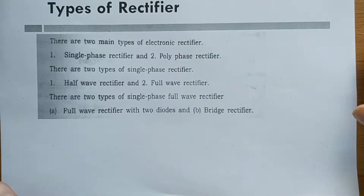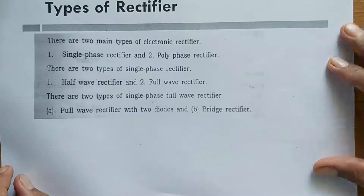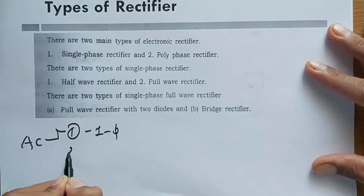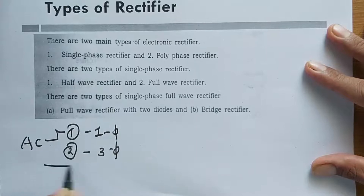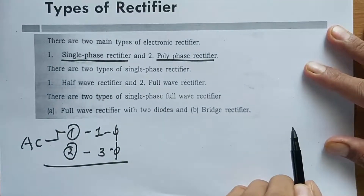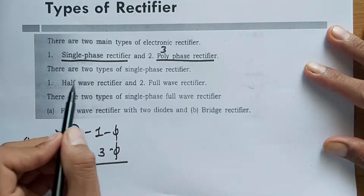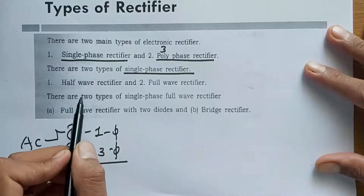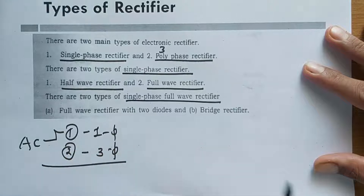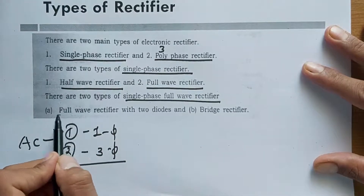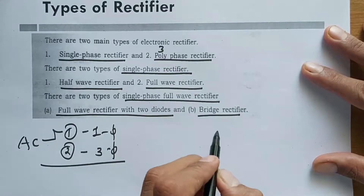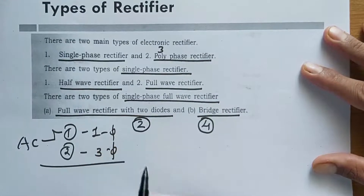There are types of rectifiers. We have AC supply which is of two types: single-phase supply and three-phase supply. Correspondingly, we have single-phase rectifiers and poly-phase, that means three-phase rectifiers. The single-phase rectifier is of two types: half wave rectifier and full wave rectifier.